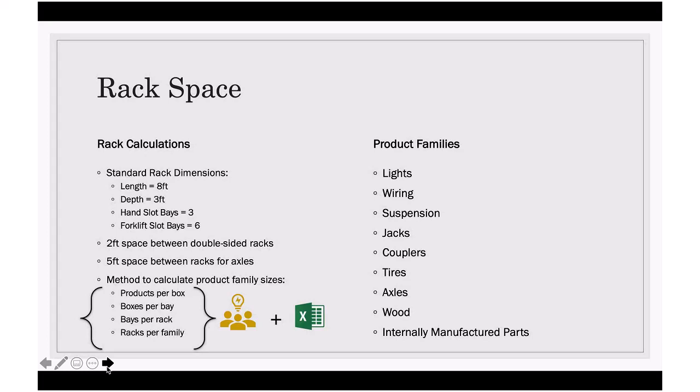For product families, we considered lights, wiring, suspension, jacks, couplers, tires, and then a couple we'd like to outline specifically are axles and wood. These constraints were more detailed in that they required special racking. And then internally manufactured parts, which come from the weld shop, are able to sit on regular racks, but their location was constrained so they were closer to the final assembly location and they also required a little more supervision.